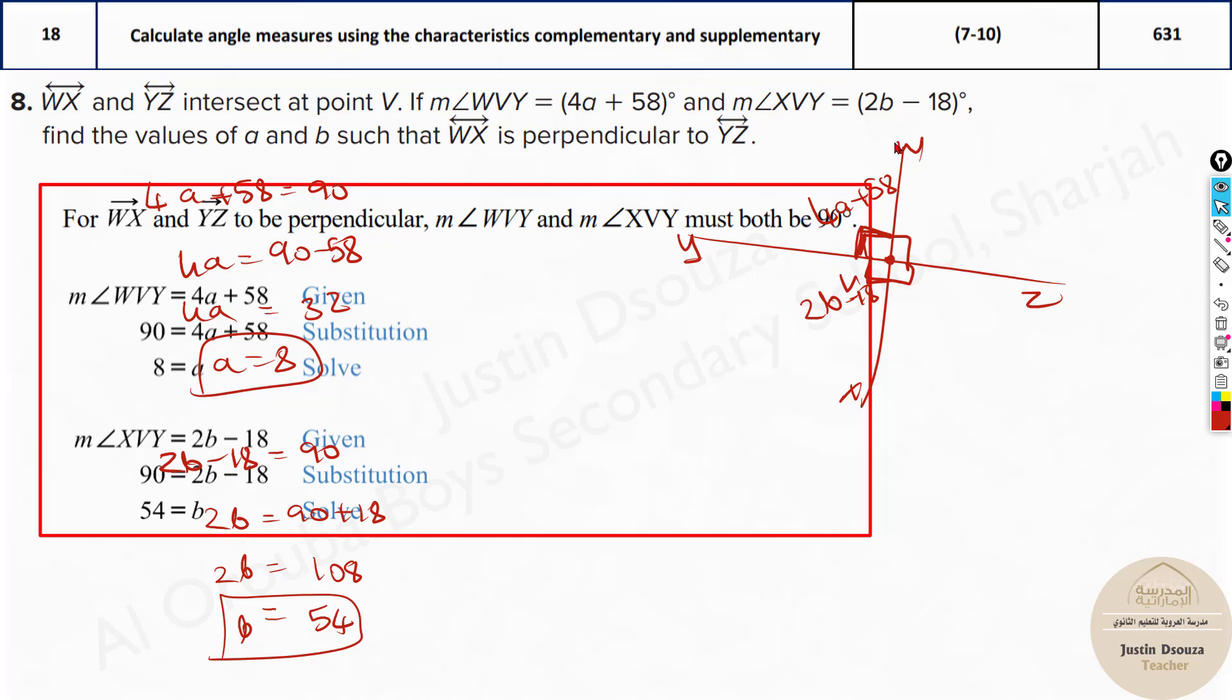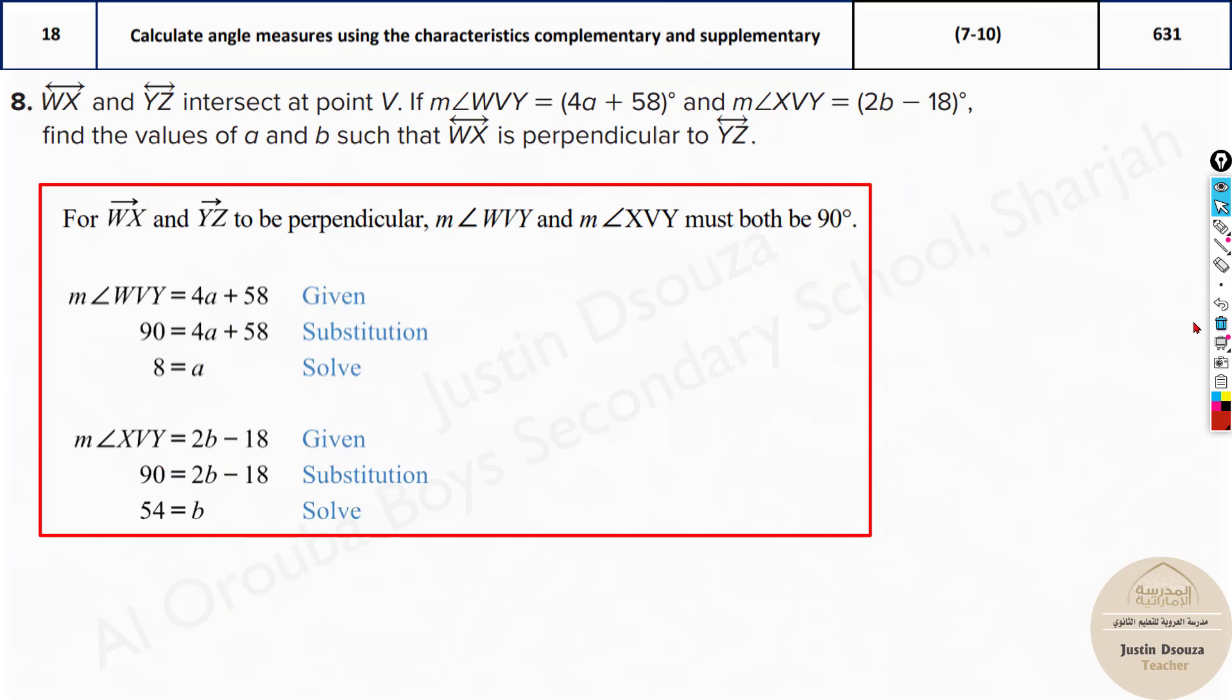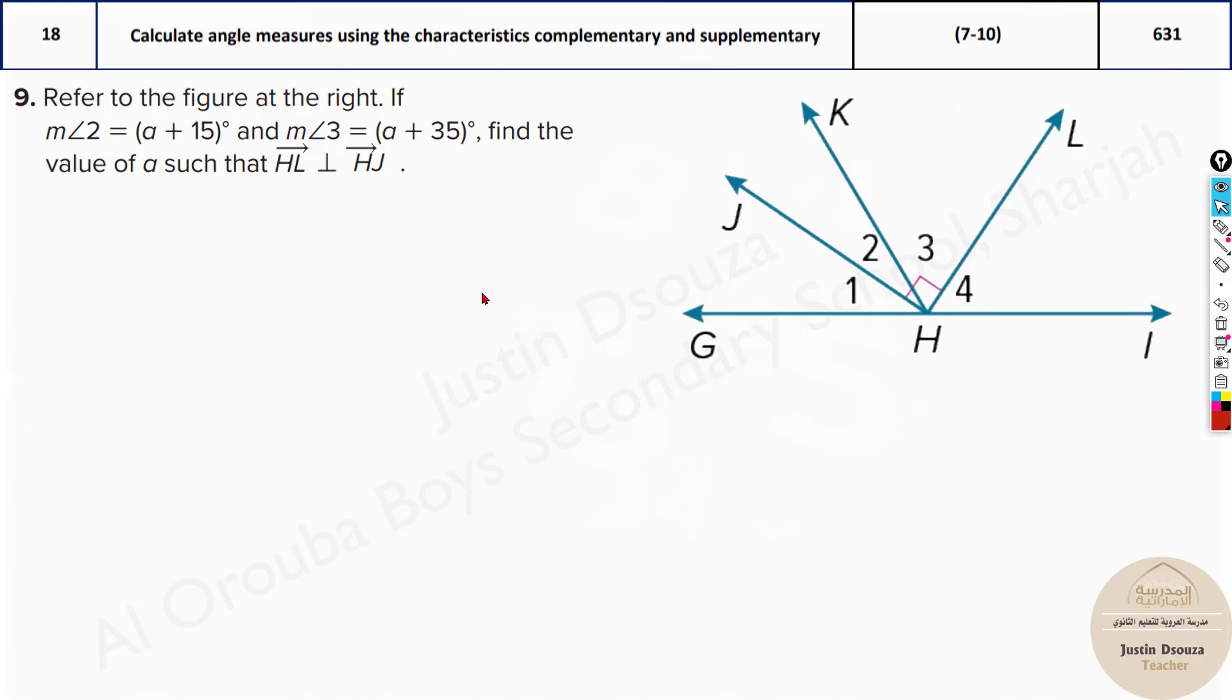So very straightforward, but it's better to draw this figure and then solve it up. And we have a figure in this problem. Refer to the figure at the right. If the measure of angle 2 is given as a + 15, let's just write it out over here, a + 15. What about this measure of angle 3? They have given it as a + 35. And we need to find the measure of a such that HL is perpendicular to HJ. They have already given it as 90 degrees. So that's enough. We know this is 90 degrees.